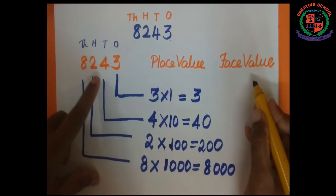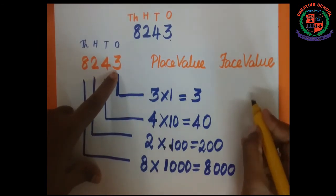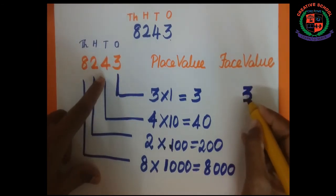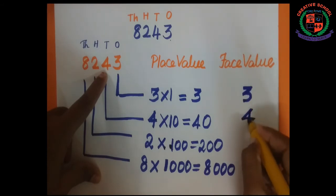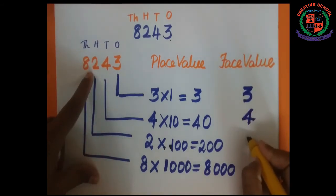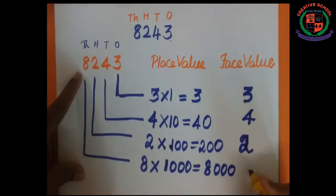How to find the face value? Ones place has 3. Tens place has 4. Hundreds place has 2. Thousands place has 8.